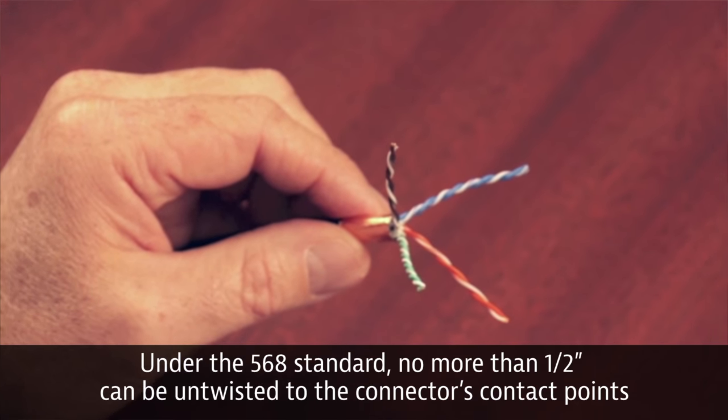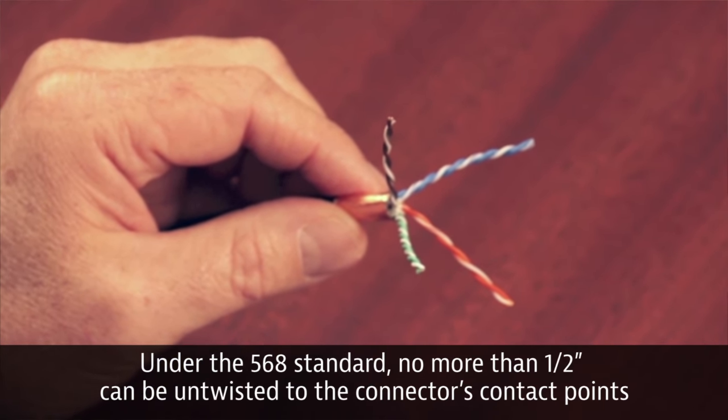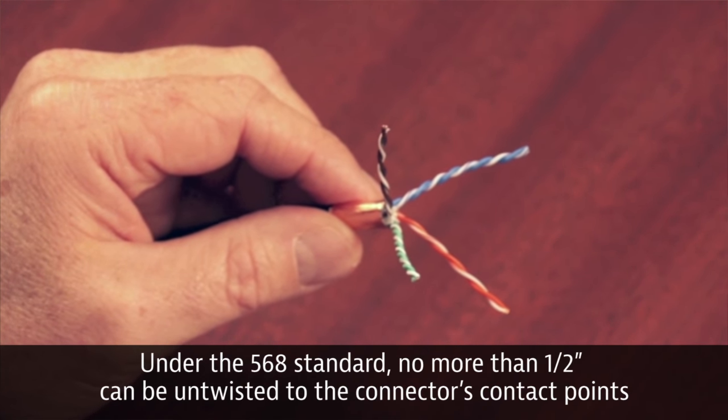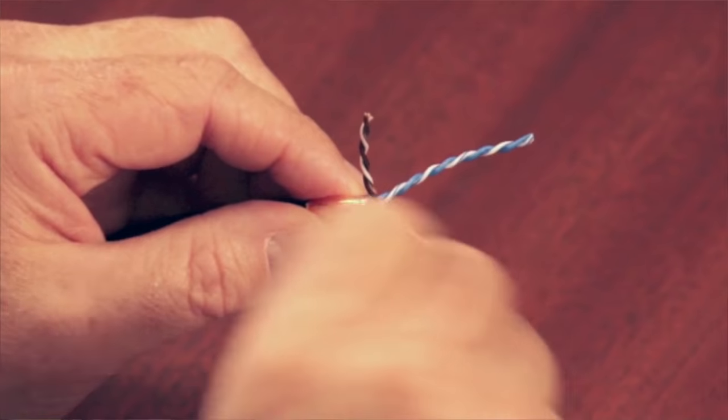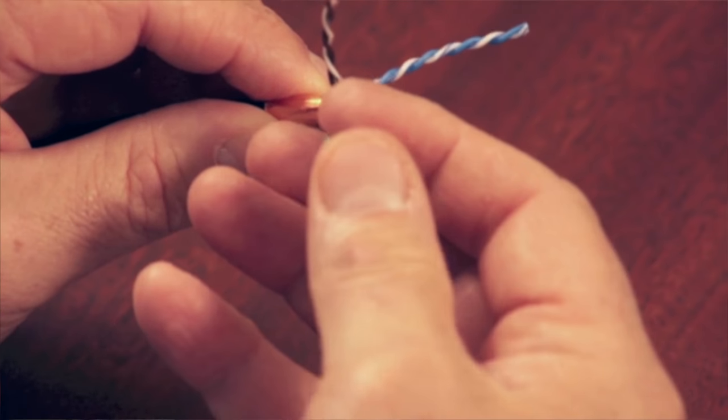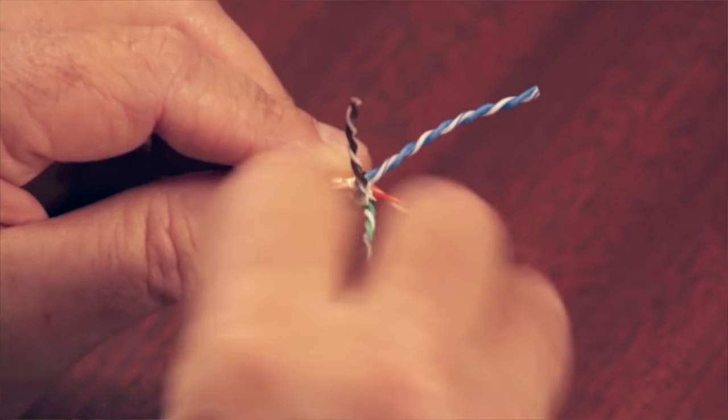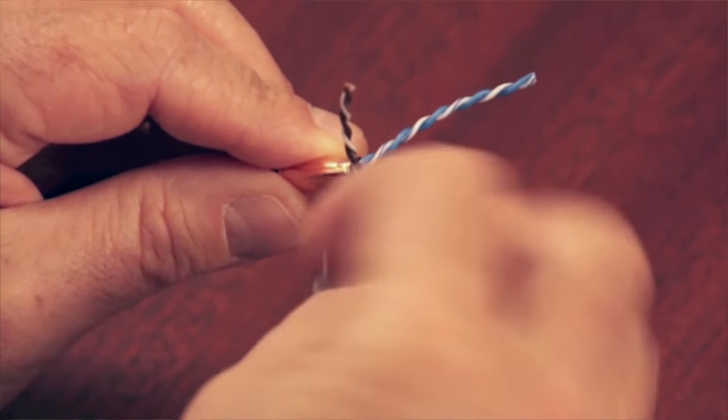Next we're going to untwist our pairs. Under the 568 standard, no more than one half of an inch can be untwisted to the connector's contact points. Make sure you untwist these, and keep your tip and ring conductors together. The white is the tip conductor and the colored is your ring.